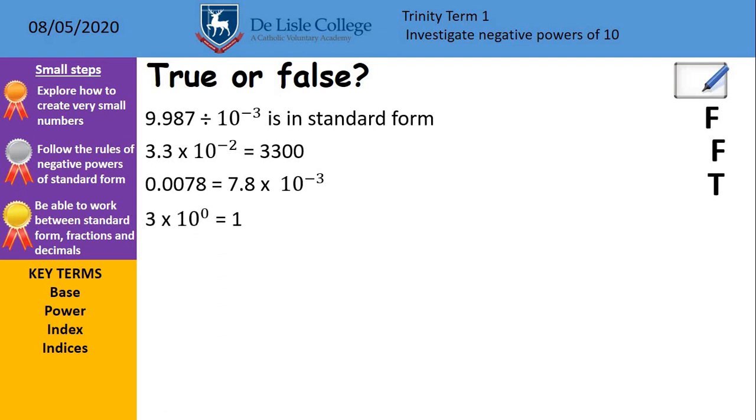Fourth one, 3 times 10 to the 0 equals 1. Is that true or is that false? And I think this one I've put deliberately to see if I can catch out a few people. That is false. We've said all along anything to the power of 0 is 1, so absolutely 10 to the power of 0 is 1, but then we need to multiply it by 3 after. BIDMAS, do your indices first, so it's 3 times 1. The answer should be 3 in that case.